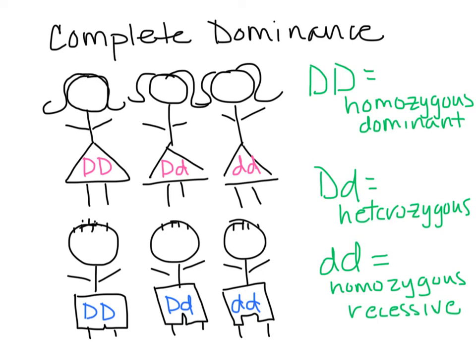Complete Dominance, part two. What if we take this woman here and this man here and cross them? What are the odds? What are the probabilities of getting different type children?